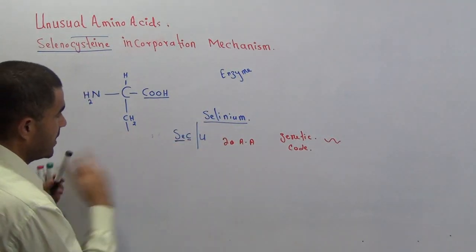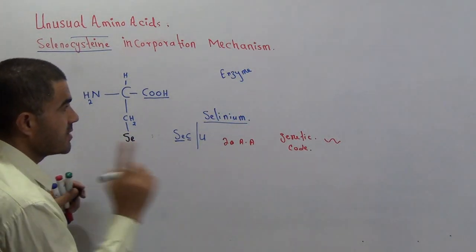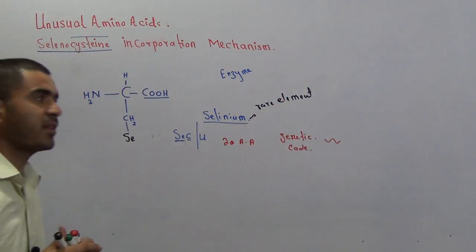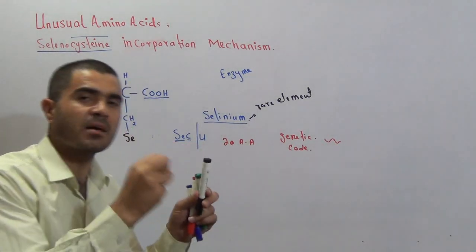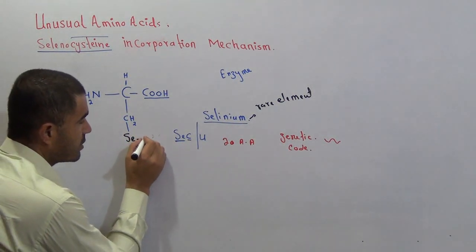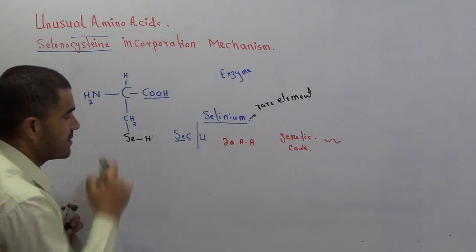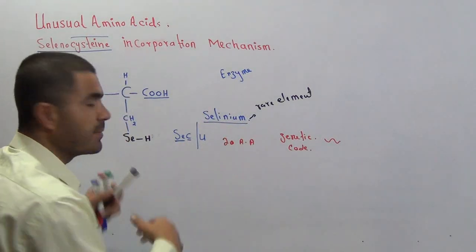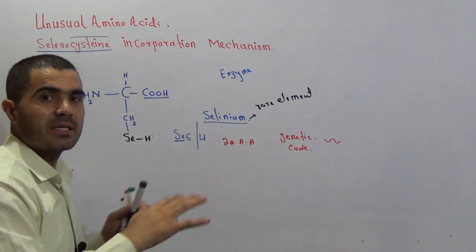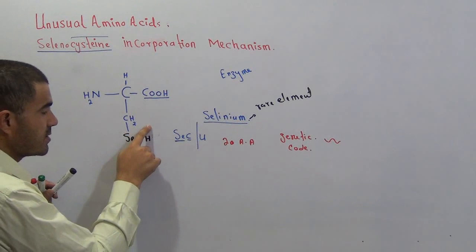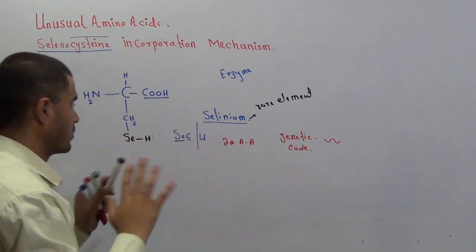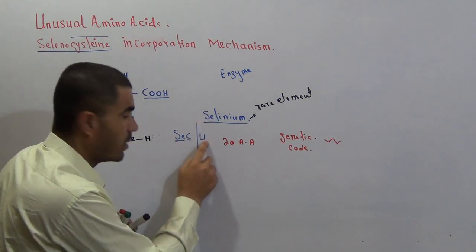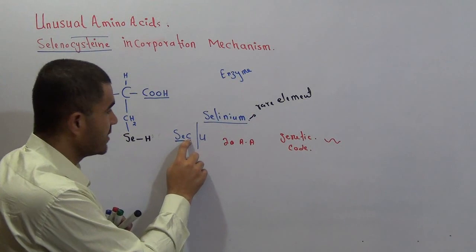Now if we replace that sulfur with another element — that is selenium, Se — selenium is a rare element; it is present in our body but we require it in very small amounts. Selenium is also bound with a hydrogen; its valency is two because it belongs to the oxygen family. Oxygen has two valency, sulfur has two, so selenium also has two valency. Now this whole amino acid becomes selenocysteine. We can represent it as Sec or U — Se for selenium, and c for cysteine.